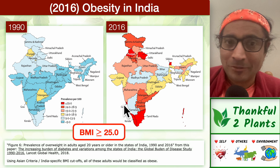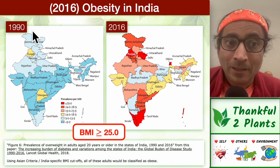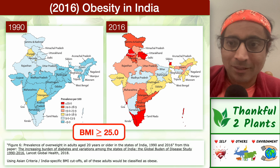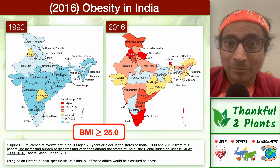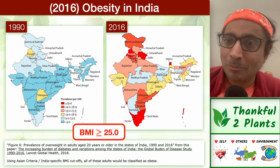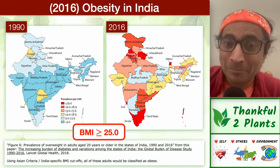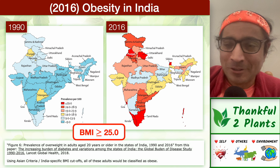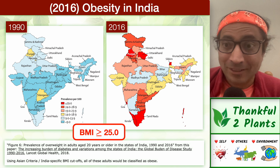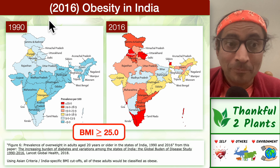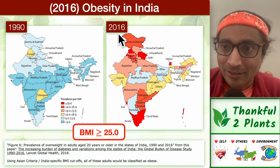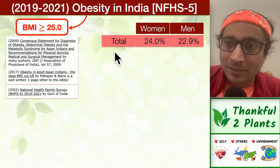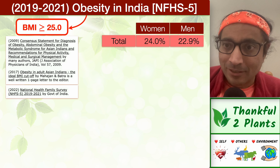Let's get a big picture of obesity. It is on the rise in India — and not just India, many countries. It's a worldwide phenomenon. Some people call it 'globacity' — a globacity epidemic. Almost all parts of the world are increasing in terms of obesity. This is 1990, this is 2016. But let's study: does it increase with affluence and urbanization?